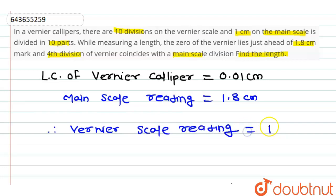will be equal to 4 times least count. That is 4 times 0.01 centimeter, which equals 0.04 centimeter.